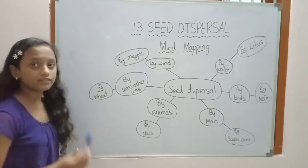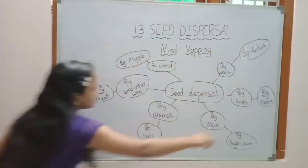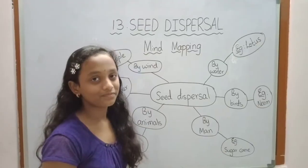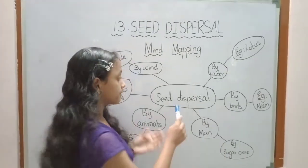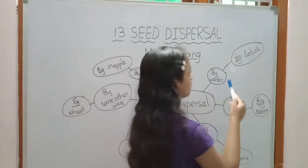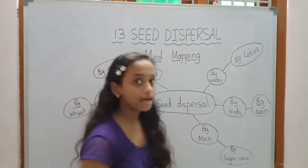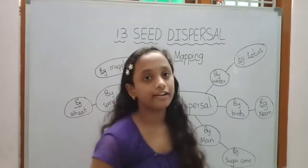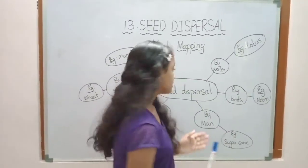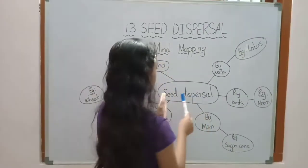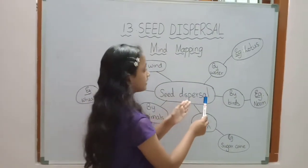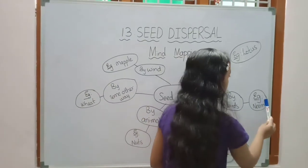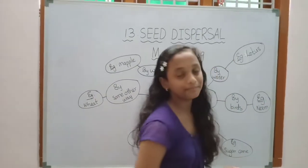Here we will learn the ways of seed dispersal. Some seeds are carried out by water. For example, lotus and coconut. Second way, some seeds are carried out by birds. For example, neem.